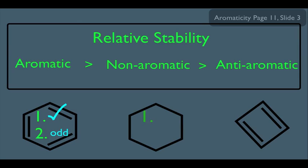To be non-aromatic, number one, you wouldn't have an uninterrupted pi cloud, nor would you have an odd pair of pi electrons.